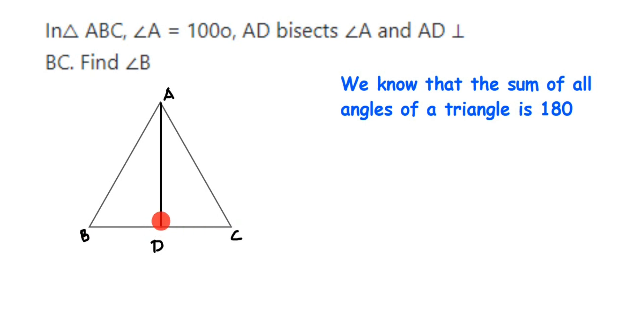We have to find angle B. That is, we have to find this angle B which we don't know. And since we're given that AD is perpendicular to BC, which means